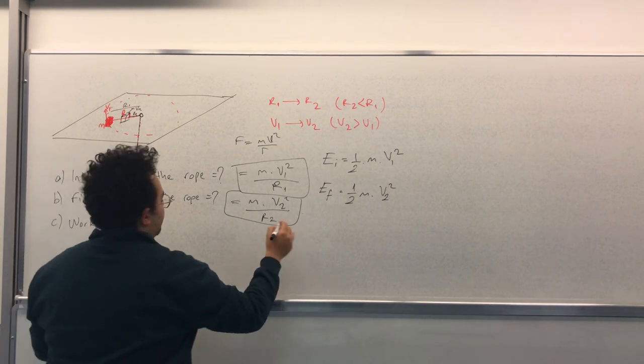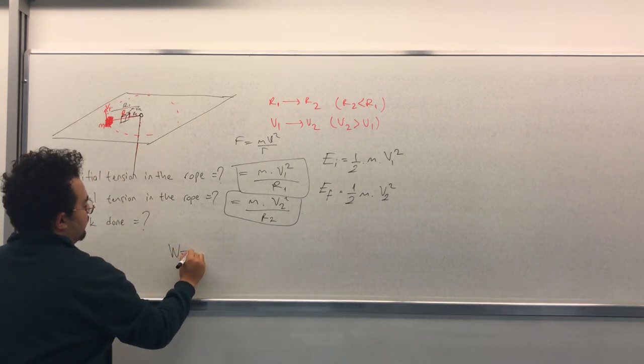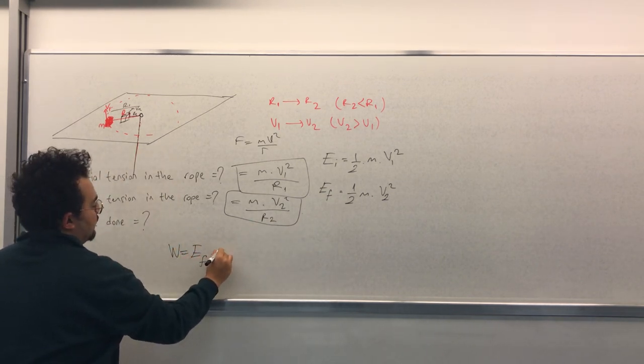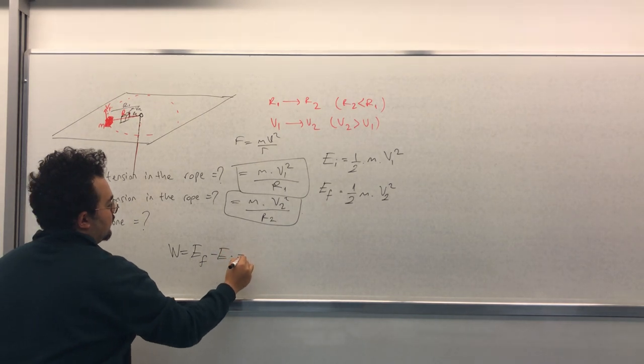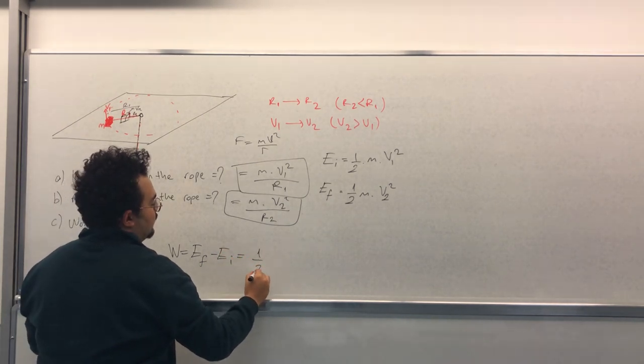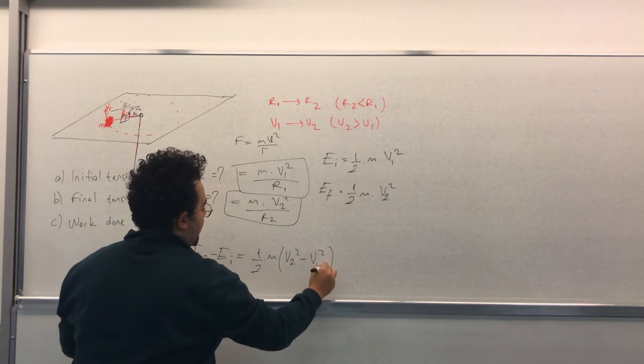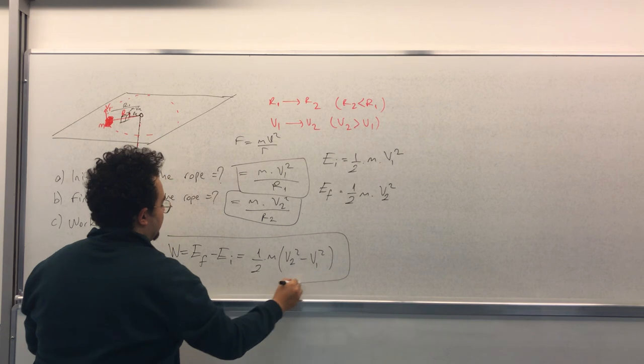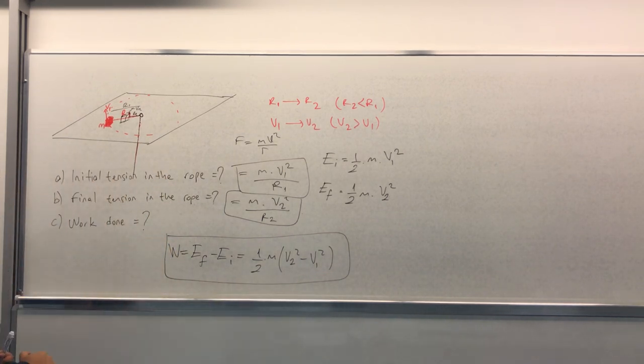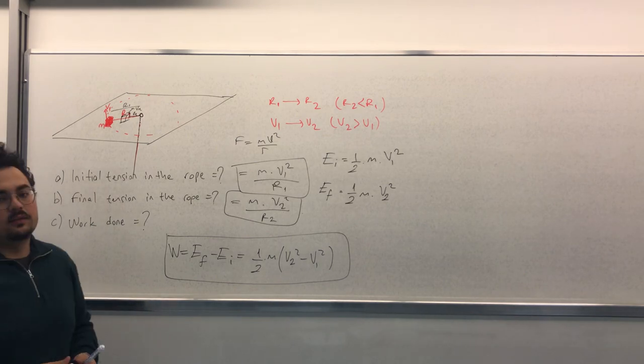So the work done equals to the final minus initial, which is one half m v2 squared minus v1 squared. This is the work done by us. Thank you guys.